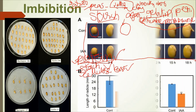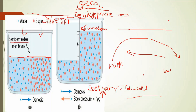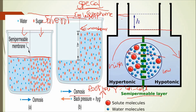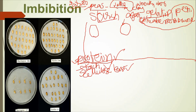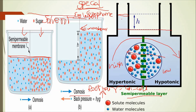We can explain the diffusion process in any state — liquid, solid, or gas. However, osmosis can only be explained in the liquid state. The osmosis process operates exclusively in the liquid state.